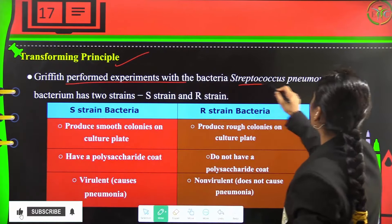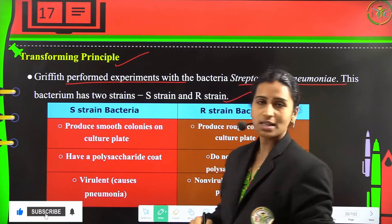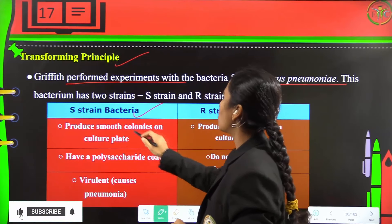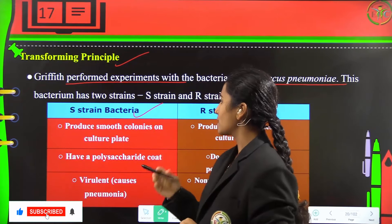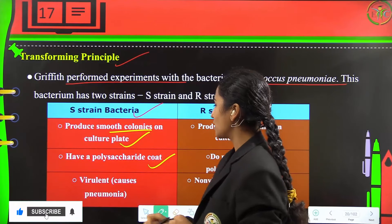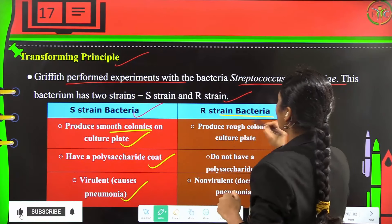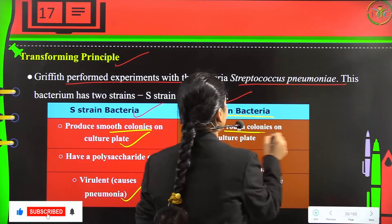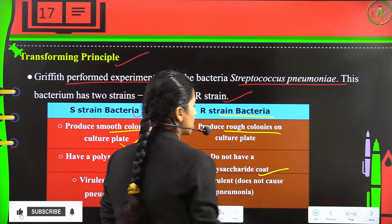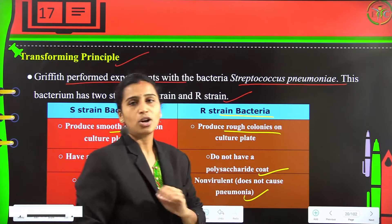Griffith performed experiments with bacteria Streptococcus pneumoniae, which had two strains. The S-strain was a smooth colony-producing, virulent strain with a polysaccharide coat that caused pneumonia. The R-strain produced rough colonies, had no polysaccharide coat, and was non-virulent — it did not cause pneumonia.